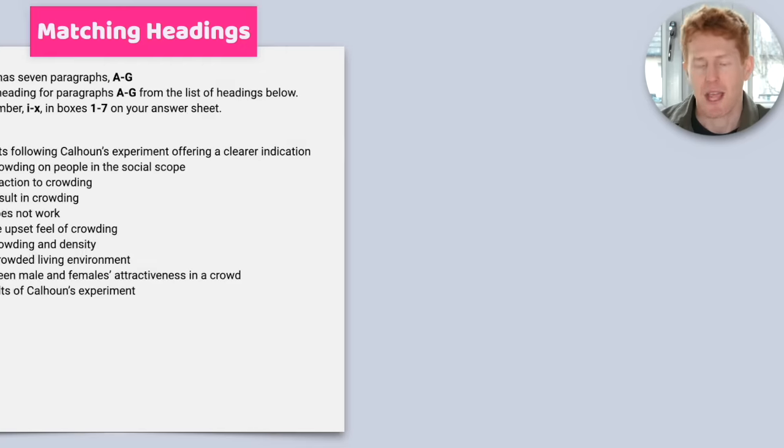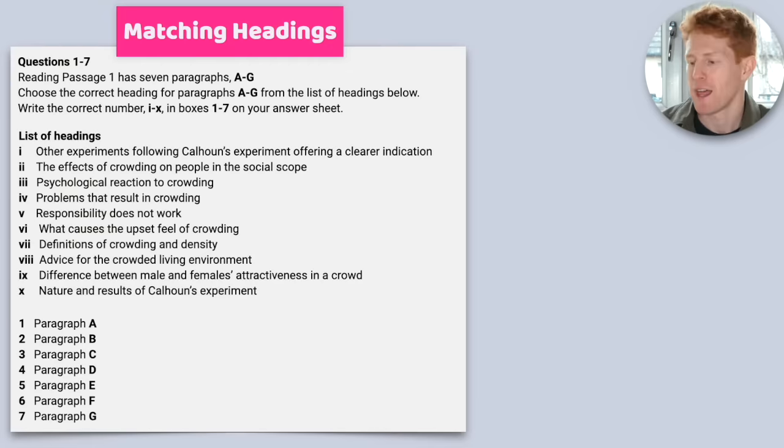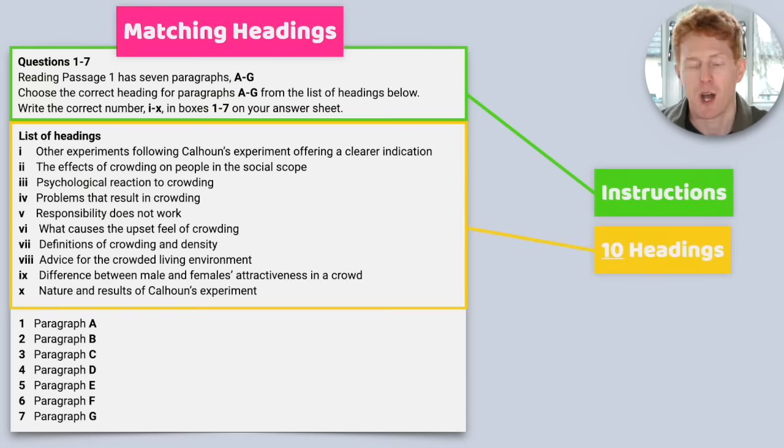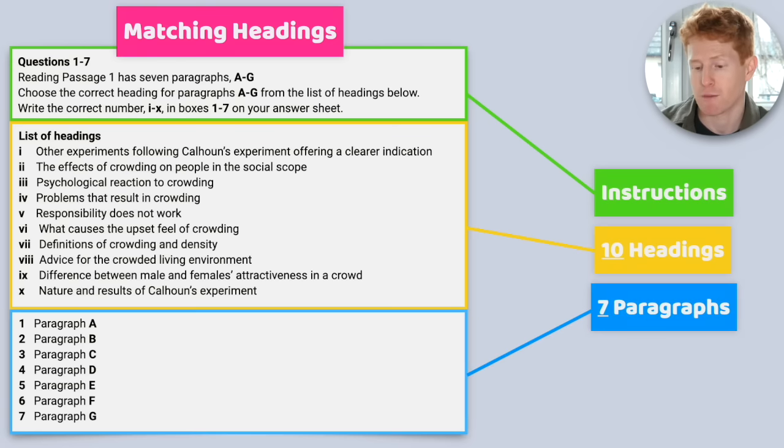Now we look at the matching headings question. There are three parts. We've got the instructions at the top. Now these are always the same or more or less the same. So pay attention to these instructions now so that in your IELTS reading test, you can just glance at them, read them quickly, but you don't need to spend time working them out. Then we've got our list of headings. Now you'll notice we have 10 headings, but when we look at our paragraphs below, we only have seven paragraphs.